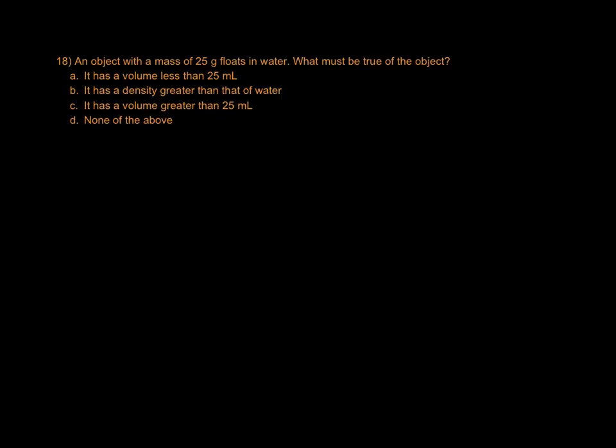If an object has a mass of 25 grams and floats in water, what must be true? If it floats in water, that means that it has a density less than one gram per milliliter. And if we know that the mass is 25 grams, that means that the volume must be greater than 25 milliliters in order for the density to be less than one. So it must have a volume larger than 25 milliliters.